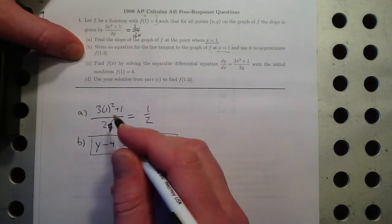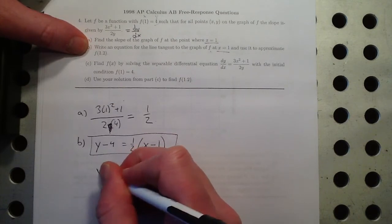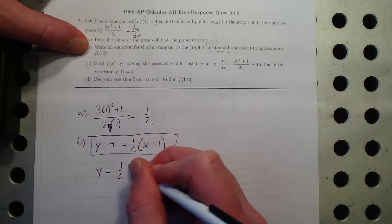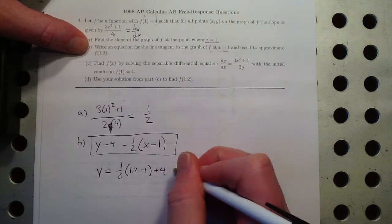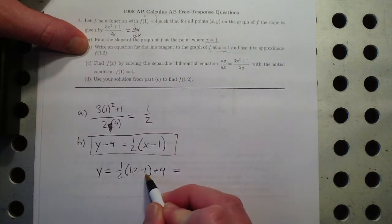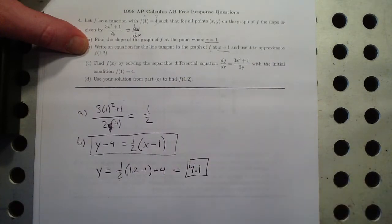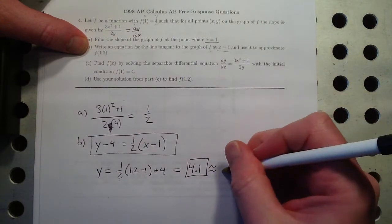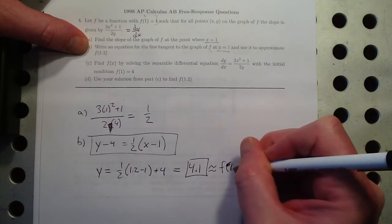So now I want to approximate f of 1.2. So that means plug that in for the x. So y would be equal to 1 half times 1.2 minus 1, and I'm going to move the 4 over to the other side. Let's see. That's 0.2 times 1 half is 0.1 plus 4 is 4.1. And that's our approximation. Just to be clear, let's say that's approximation for f of 1.2.